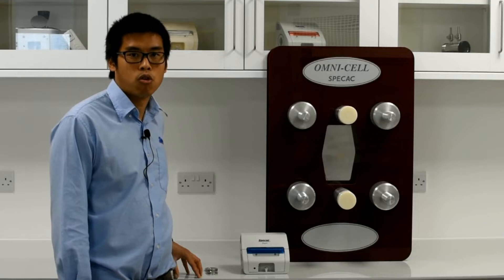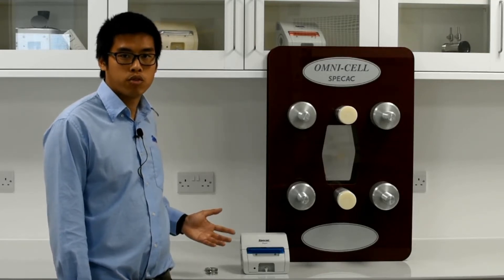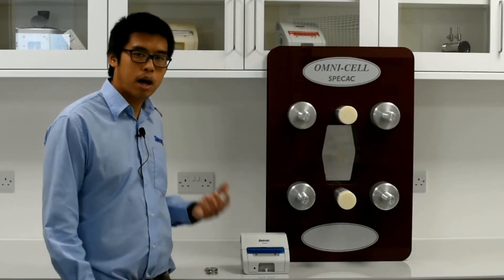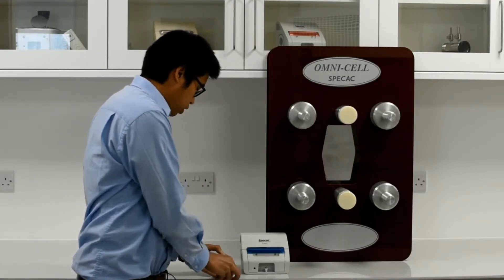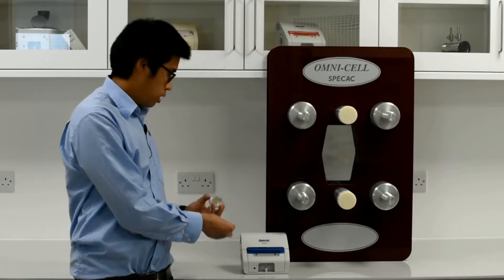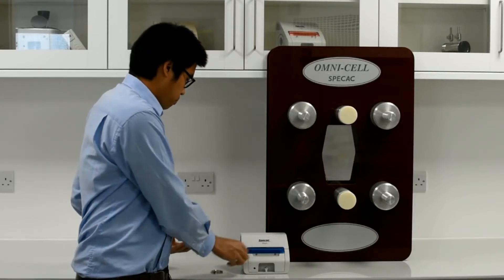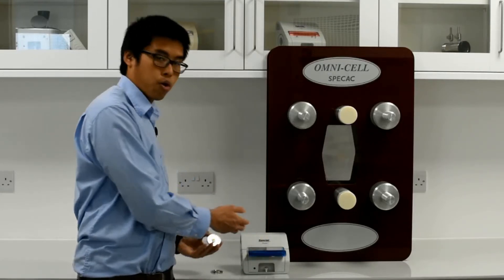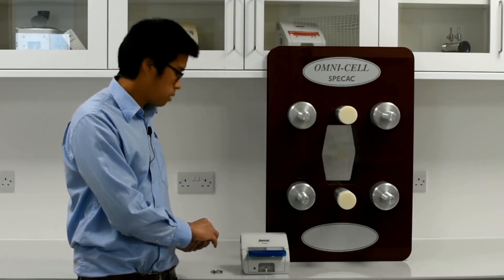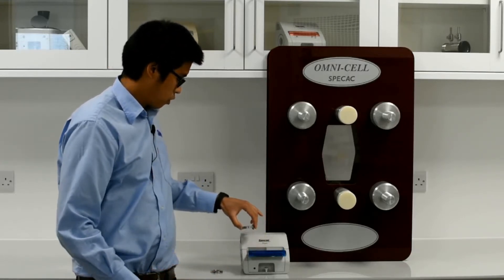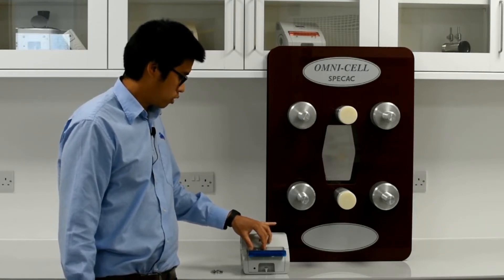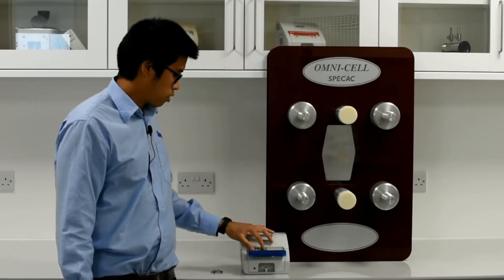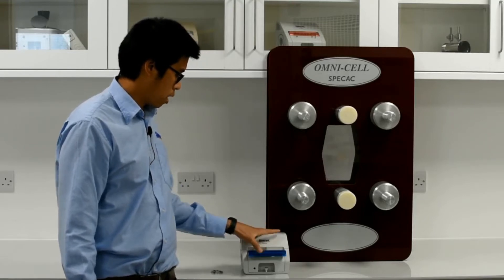We provide two different types of optical materials for the Pearl liquid transmission cell: calcium fluoride and zinc selenide, and these go into the oyster cells you see here. Essentially you put the bottom window into the Pearl optical unit, put your liquid onto the bottom cell, and then the top cell to sandwich the liquid sample between the top and bottom oysters.